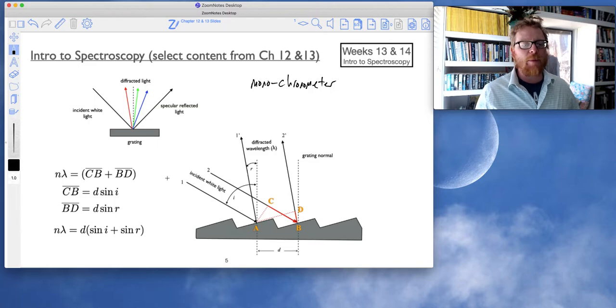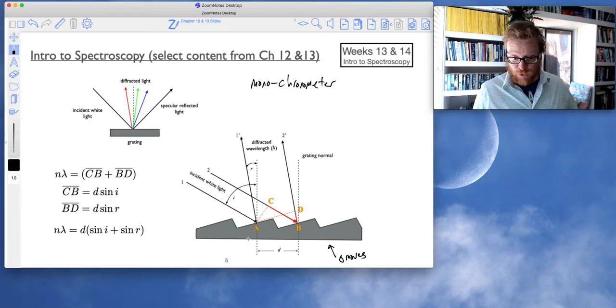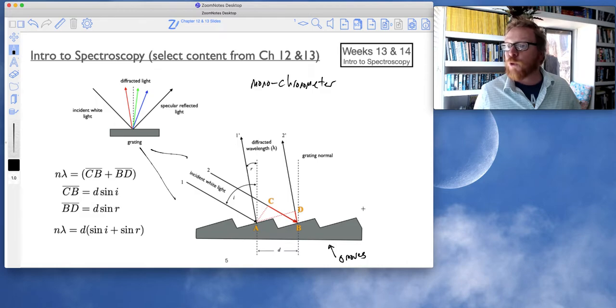However, if we put some grooves on this surface, so zooming into this grating right here, they're actually not a smooth surface, but rather they have very regular grooves, typically indicated by this distance D. So, this distance D is giving me the center point of this groove to the center point of this groove.